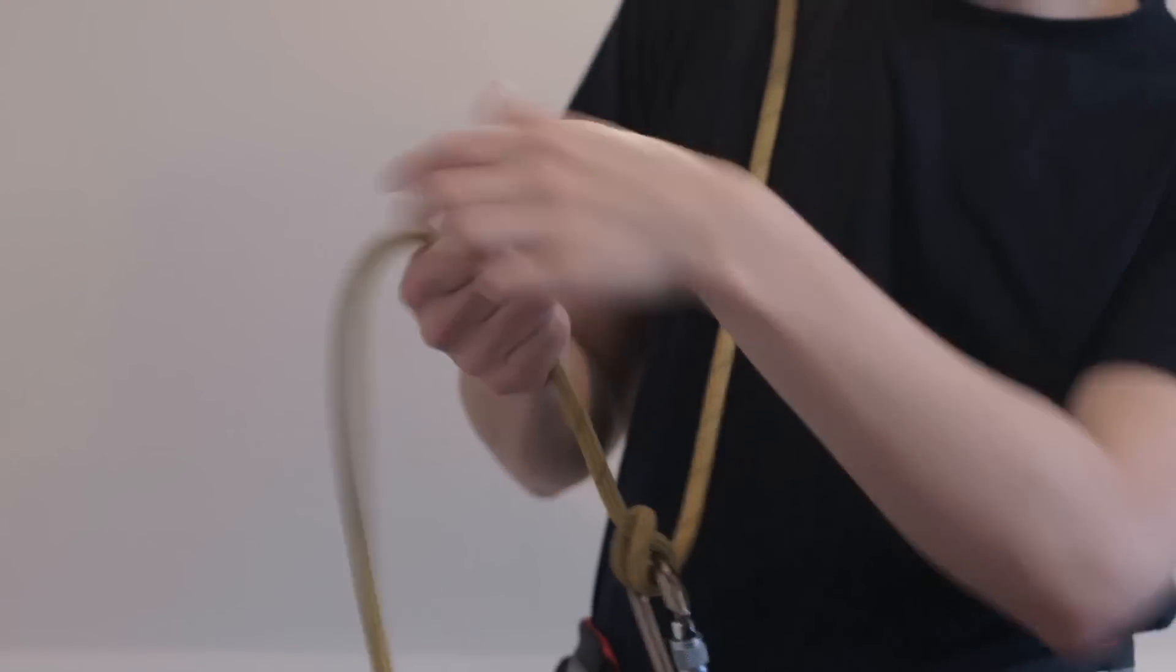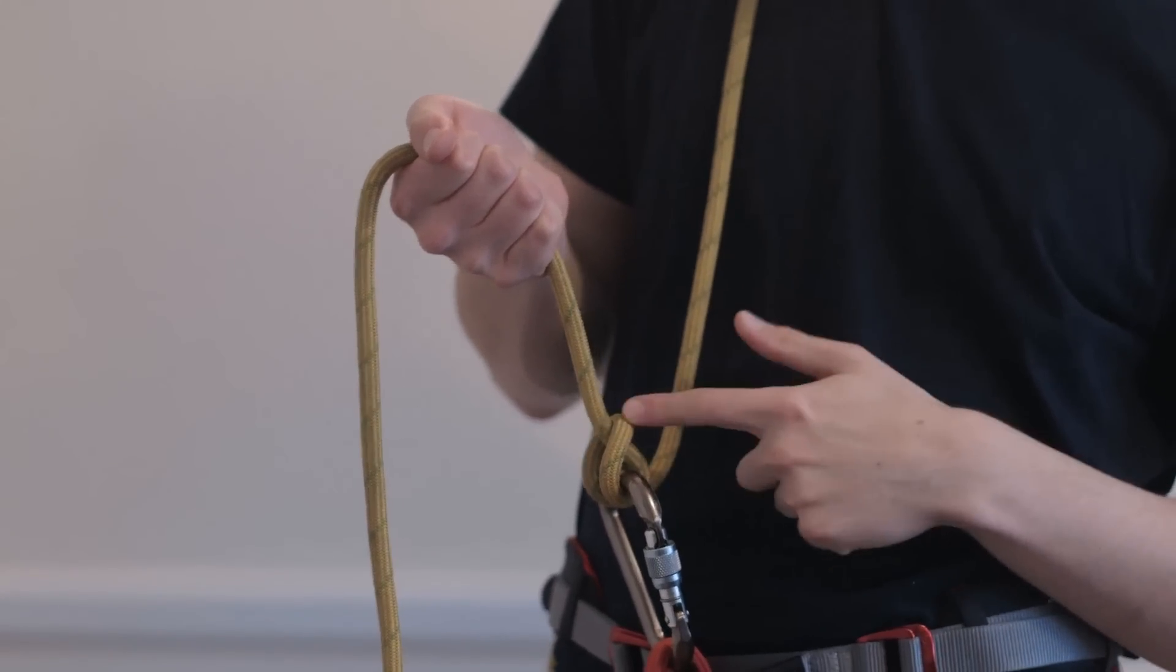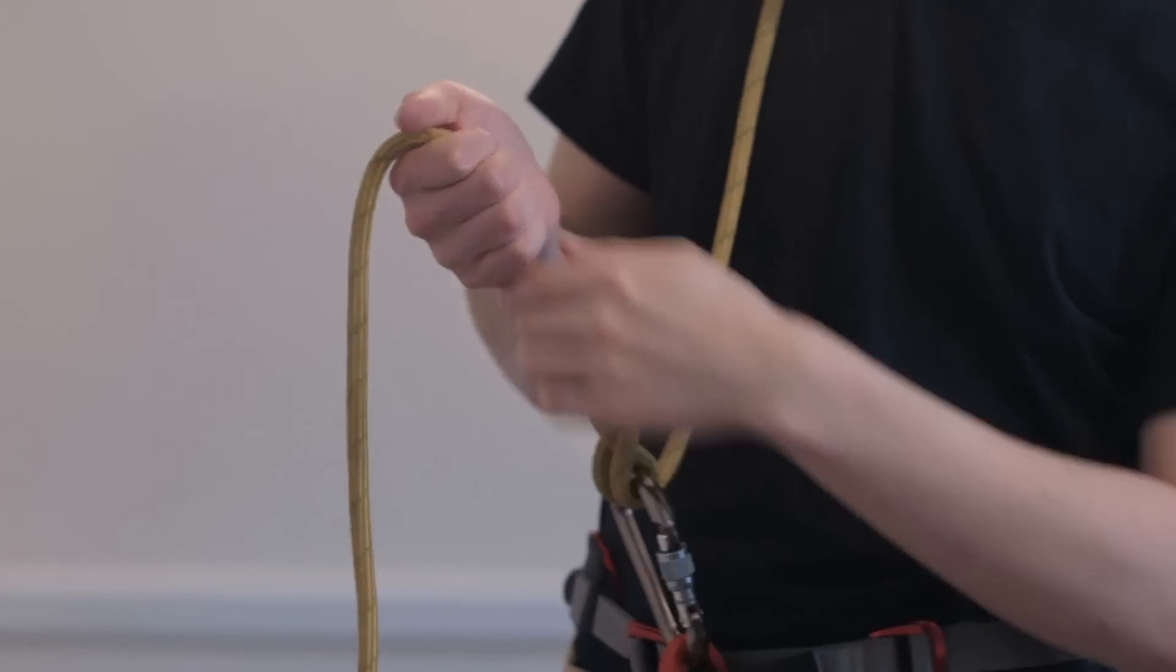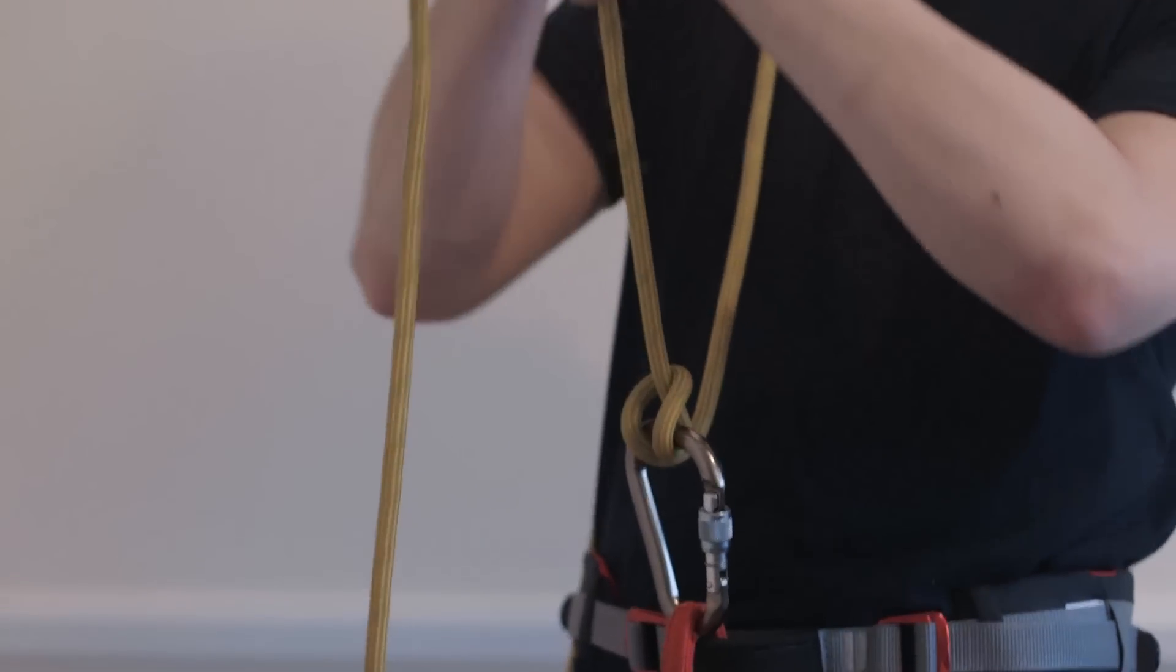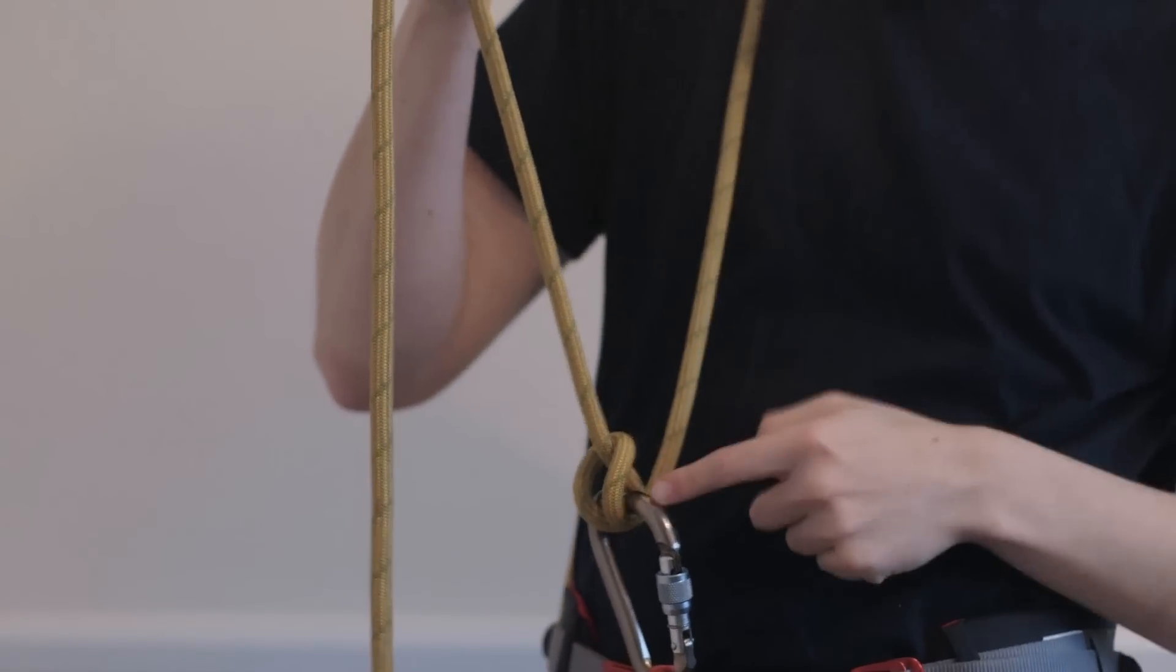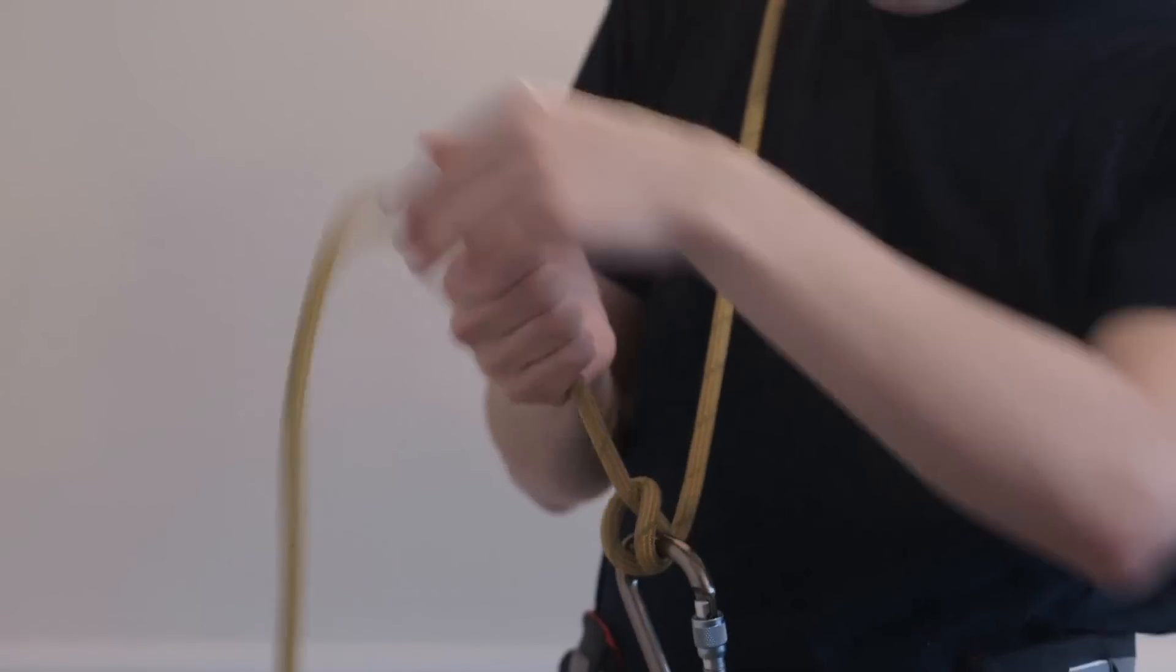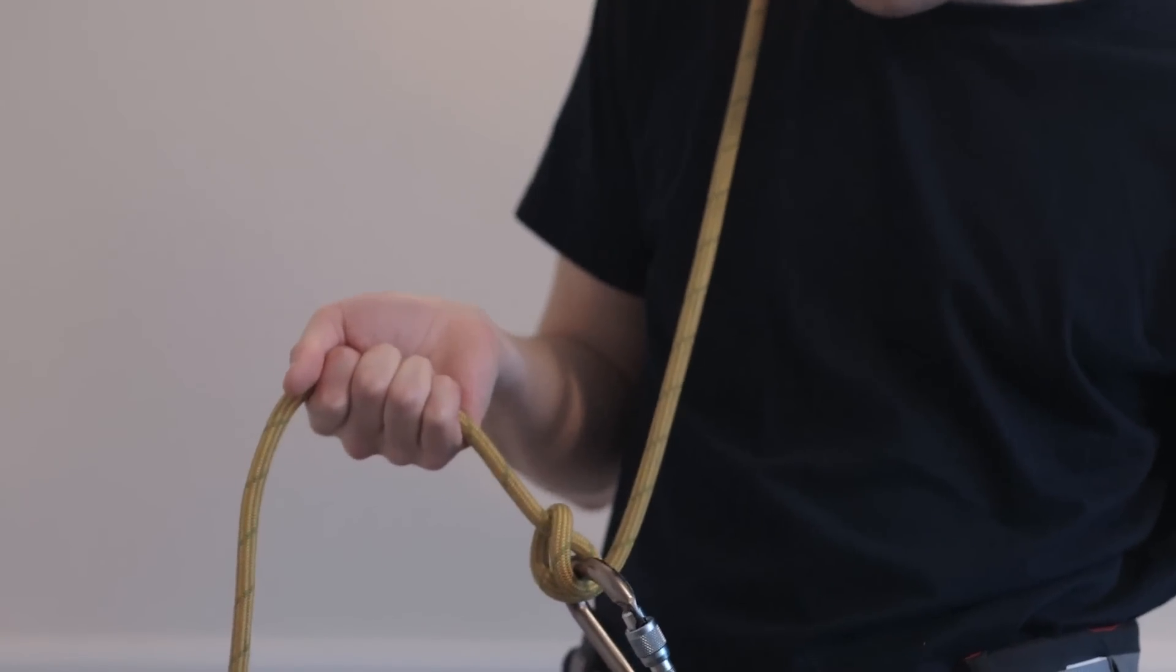But either way is acceptable. I would personally do it like this. A lot of people, when they're belaying with the Munter Hitch, they use a ground anchor, so they've got a little bit more leverage, and they can just pull up, and they've got a bit more distance between the carabiner and the brake hand. But, as I said, it's personal preference.